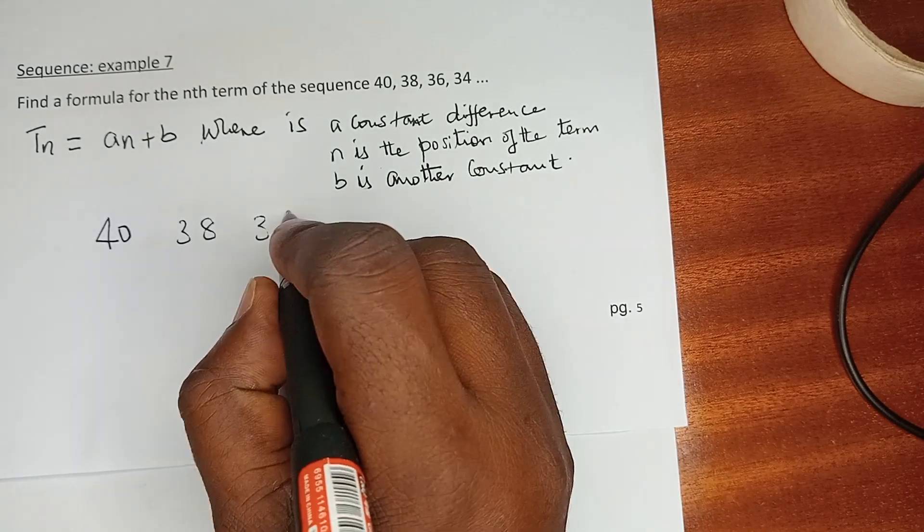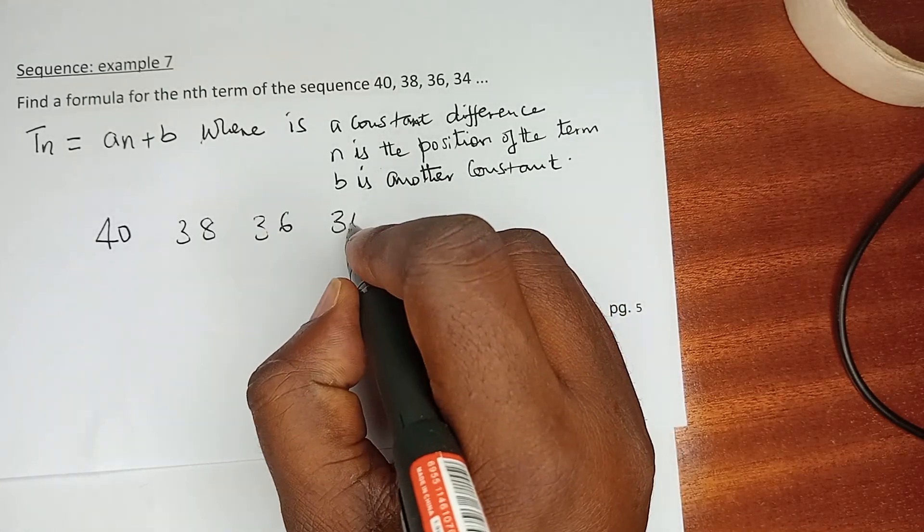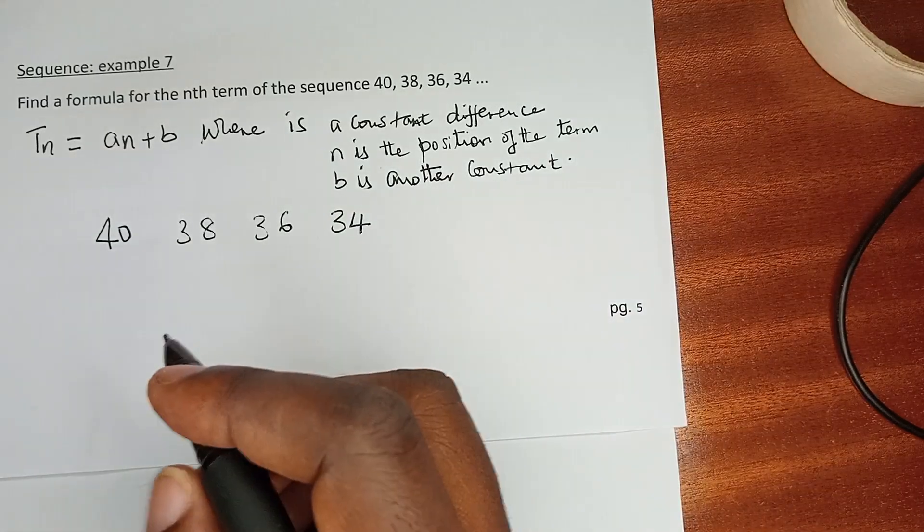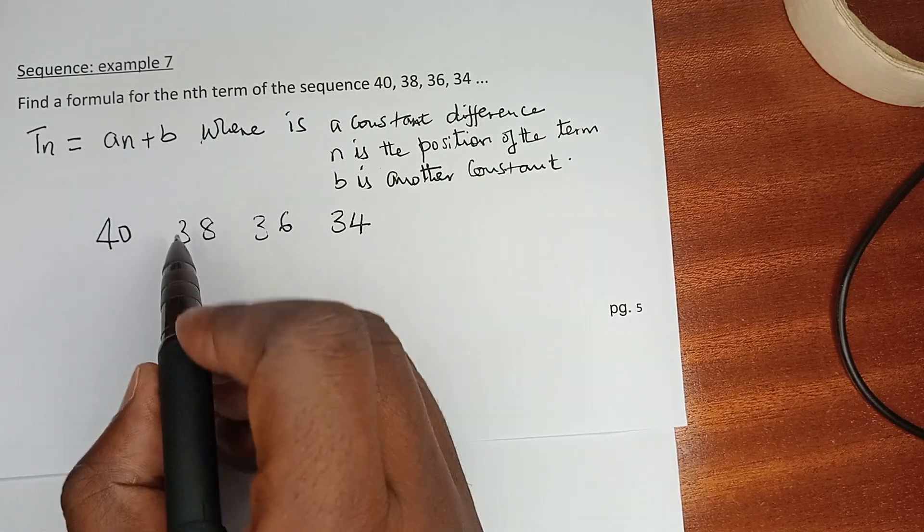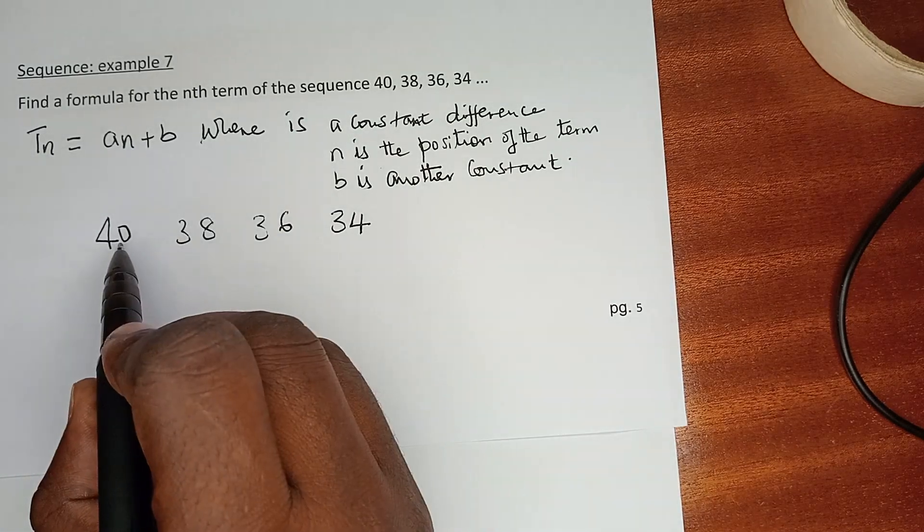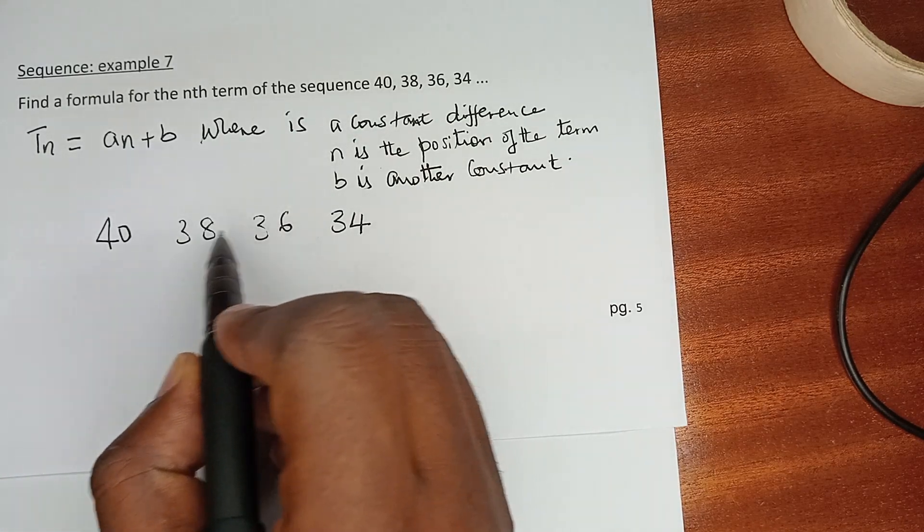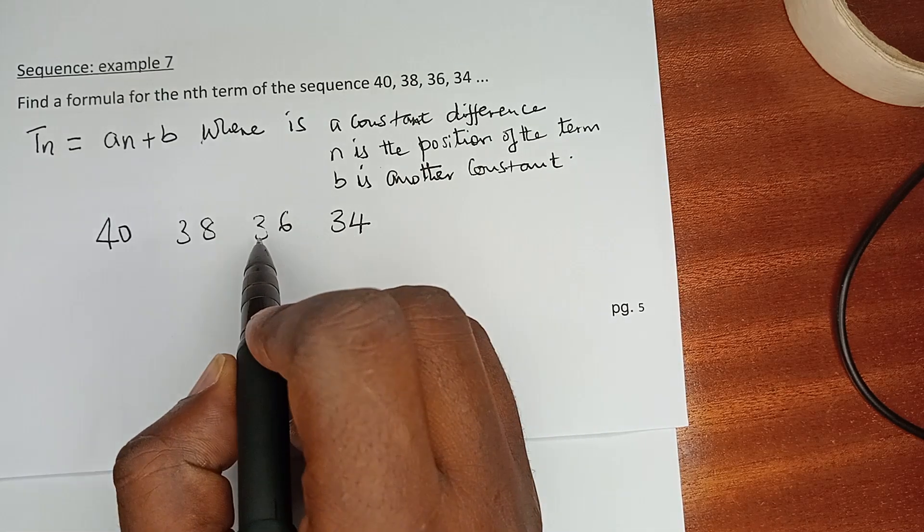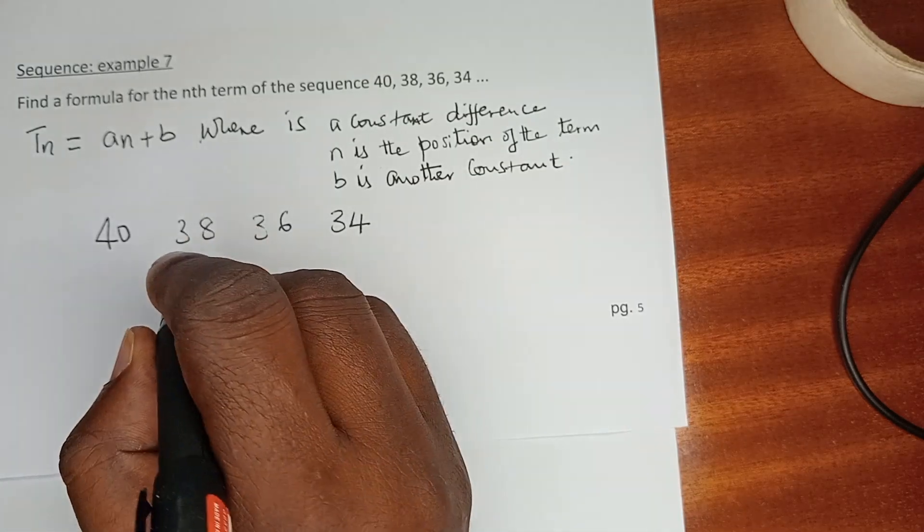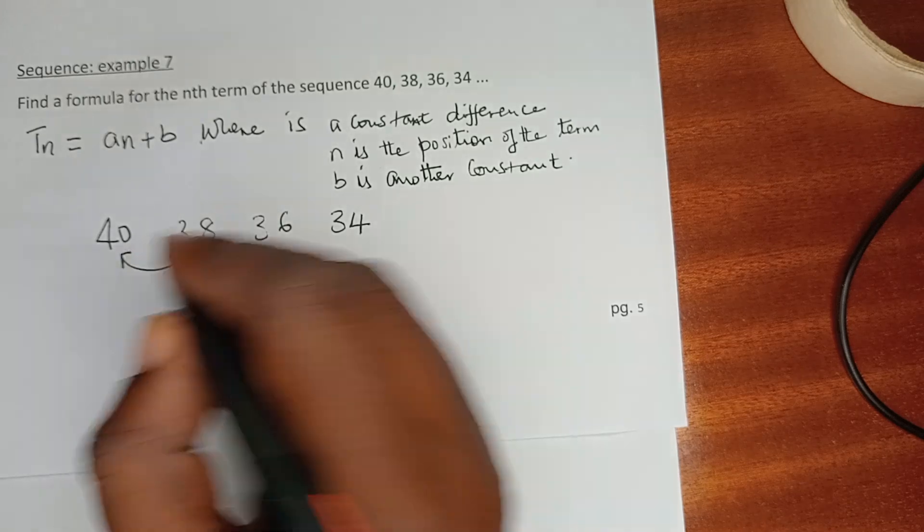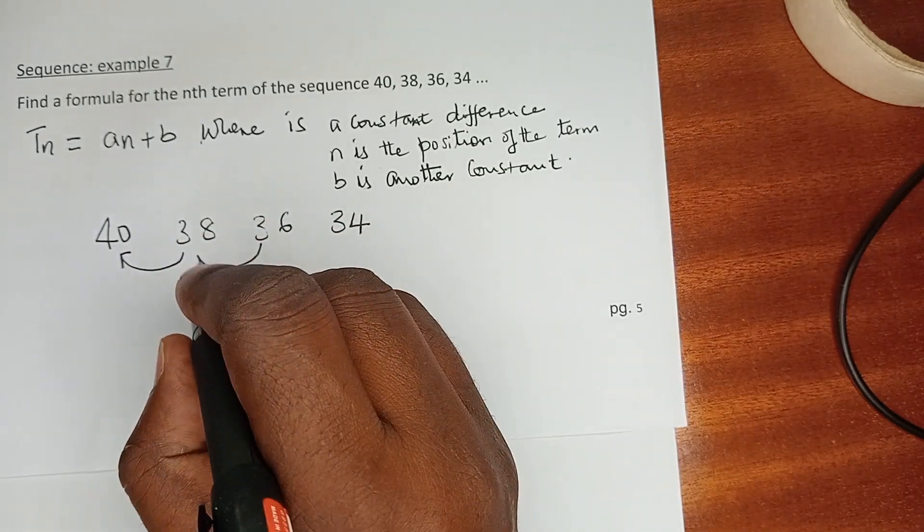term 2 minus term 1, term 3 minus term 2, or term 4 minus term 3. So if we get that one, subtracting that which is actually common throughout—that subtracting that and that subtracting that to get the common difference